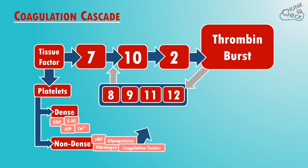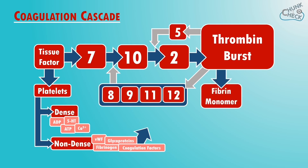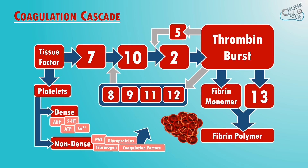Back to thrombin: this also activates factor 5 which feeds back into the system to increase the amount of thrombin further. Thrombin also converts fibrinogen to fibrin monomers, and activated factor 13 cross-links these fibers to form a fibrin polymer, which is your fully formed stabilized blood clot.